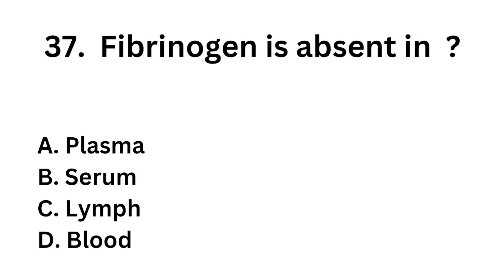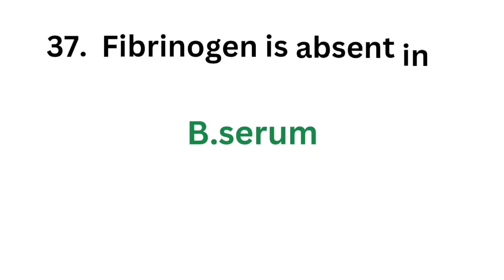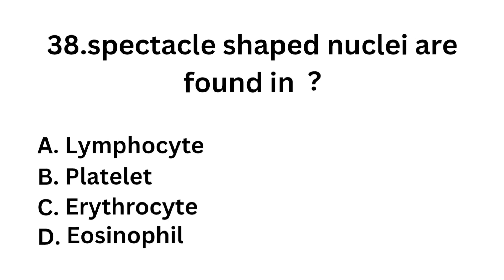Question number 37: Fibrinogen is absent in which of the following? Option A: Plasma. Option B: Serum. Option C: Lymph. Option D: Blood. The correct answer is Option B: Serum. Fibrinogen is converted to fibrin, which in turn converts prothrombin to thrombin to form a clot. Therefore, fibrinogen is absent in serum.